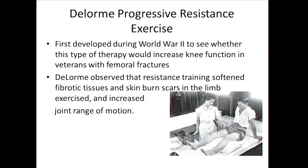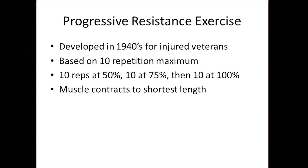DeLorme basically used weights and pulleys for men in hospital, based on a 10-repetition maximum: 10 reps at half the weight, 10 at three-quarters, then 10 at 100%. What everybody misses from his original 1945 paper is that the muscle is loaded when it's short. If I take a triceps and load it with my arm straight, the triceps is short and doesn't have to work very hard — but it does work hard when shorter. All of DeLorme's exercises are done with the muscle in the shorter position. Because the muscle is not as strong when short, you can fatigue it with less weight, and it seems to soften the tissues as well.